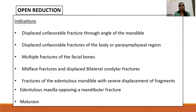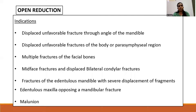Open reduction means we are surgically opening up the fracture, visualizing the two fractured segments, and manually reducing them. It is indicated in unfavorable fractures, especially at the angle of the mandible where one side of the fracture does not have teeth, so we cannot attain proper reduction without opening it surgically. Unfavorable fractures in the parasymphysis area, multiple fractures in facial bones, midface fractures, and bilateral condylar fractures are often treated with open reduction. Fractures of the edentulous mandible and severely displaced fractures, wherein malunion may occur with closed reduction, also require open reduction.